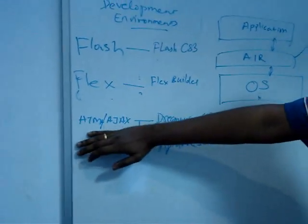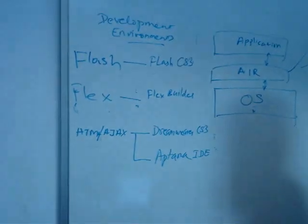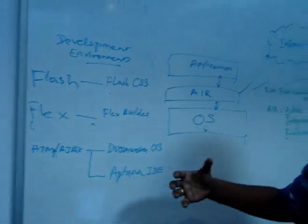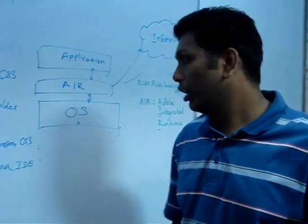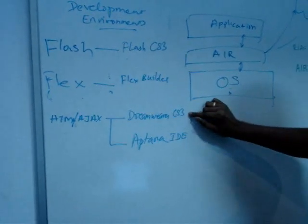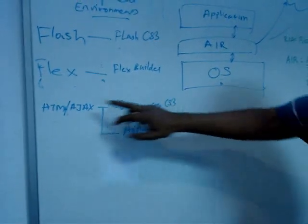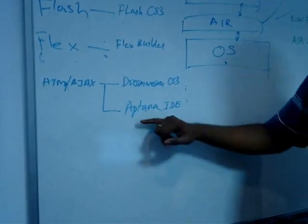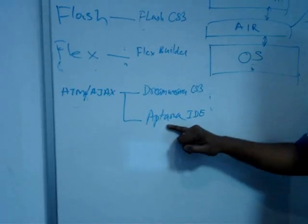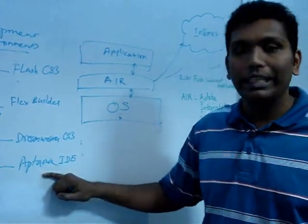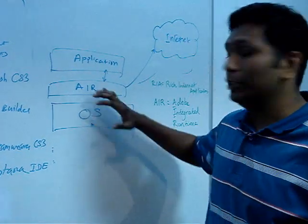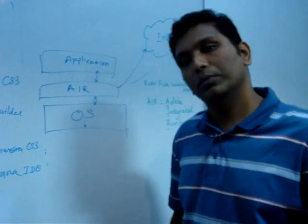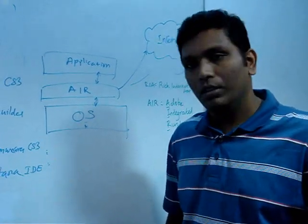The third option, which is pretty interesting, is the HTML and AJAX paradigm — that's where the bulk of developers are right now. Adobe has solutions for them too. Dreamweaver, one of the most popular development environments for HTML and AJAX, has an add-on in Dreamweaver CS3 that lets you export HTML applications directly into AIR. There's also Aptana, a popular IDE with AJAX and JavaScript developers, which also has an AIR plugin so you can develop in Aptana and export to AIR. For HTML and AJAX developers, there are two options: Dreamweaver or Aptana.